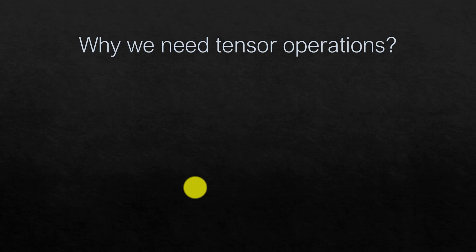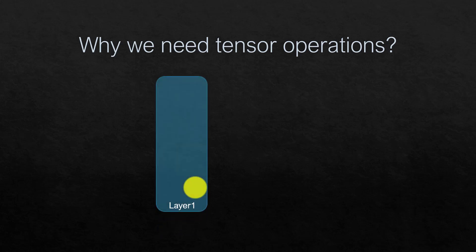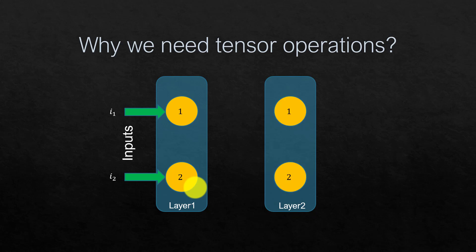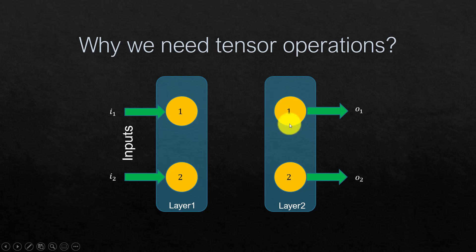To make things easier, we will work with how different data are getting processed through the neural network and from there we'll try to see why tensor operations are needed. Let's say we have two layers of a neural network: layer one, which is our input layer where inputs i1 and i2 are coming in, and layer two, which is our output layer generating the output.